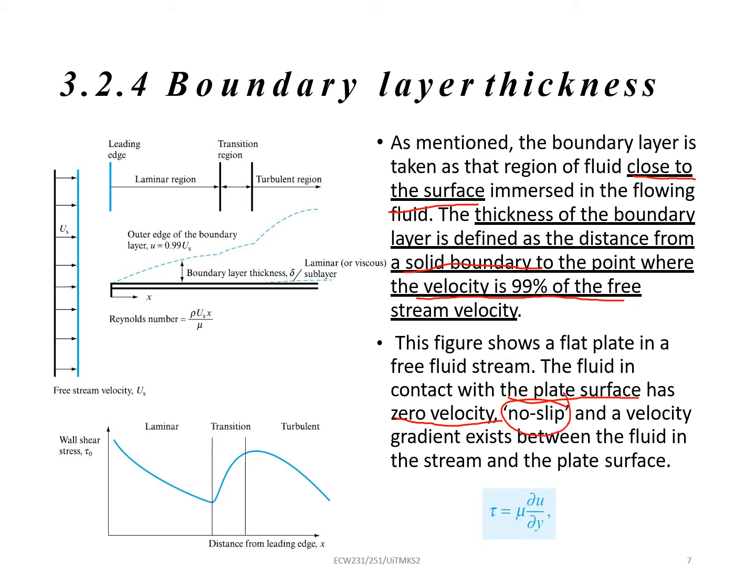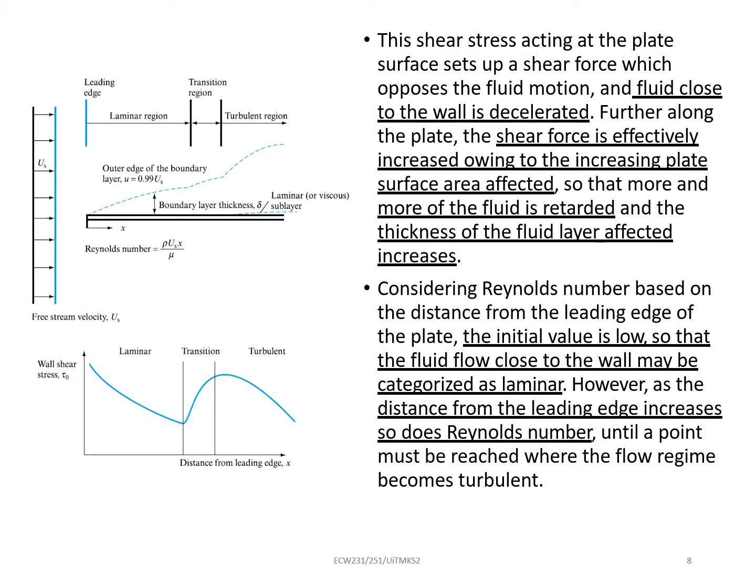And a velocity gradient exists between the fluid in the stream and can be written down as shear stress, because shear stress will develop. So shear stress equals to dynamic viscosity over dv or du divided by dy. Remember, du is velocity, dy is thickness, boundary layer thickness.